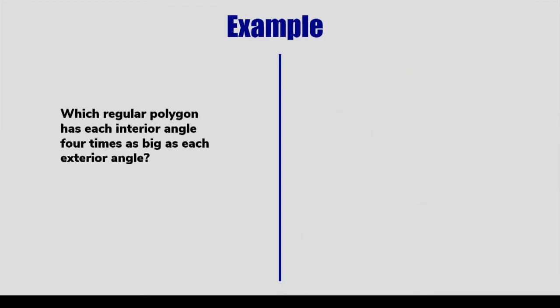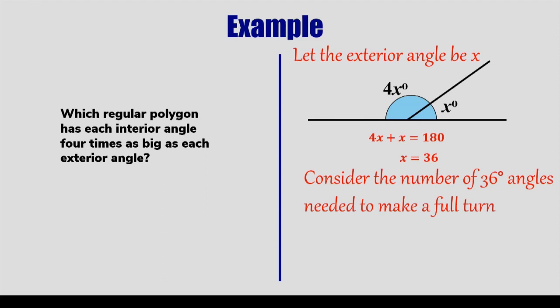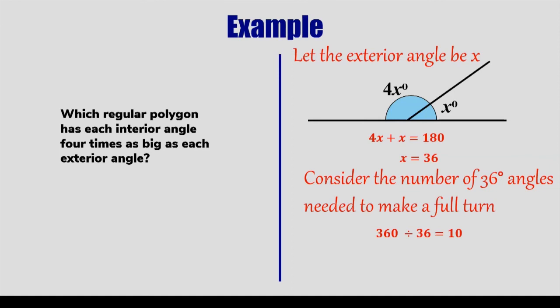Which regular polygon has each interior angle four times as big as each exterior angle? Whoa. I think we need a diagram for this. And we also need a letter to stand for the exterior angle. I think I'll choose x. And then the interior angle will be four times as big, 4x. So there's the diagram - we can see the two angles sitting on a straight line. One of them's x, the other's 4x. So if they're added together, they will give 180. So if 5x is equal to 180, x must be equal to 36. So if the exterior angle is 36, how many 36s will make a full turn? Well, divide 360 by 36 and the answer is 10. So there will be 10 exterior angles. So the polygon has 10 sides. It must be a decagon.